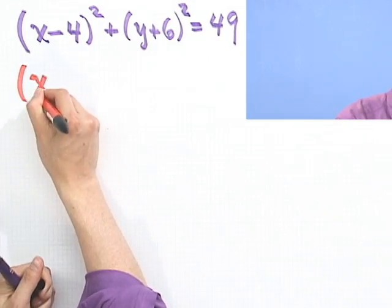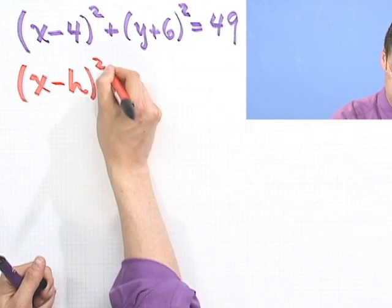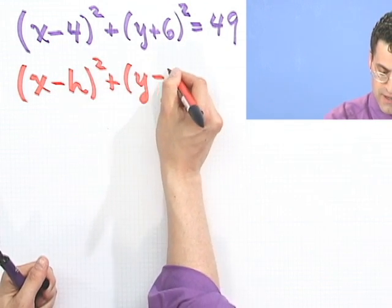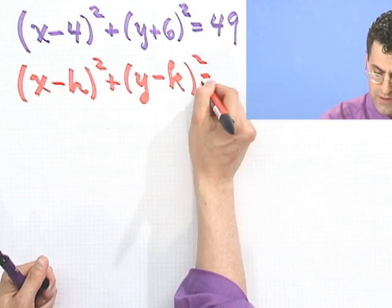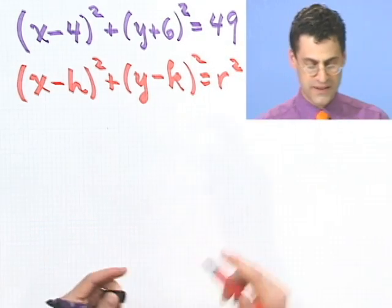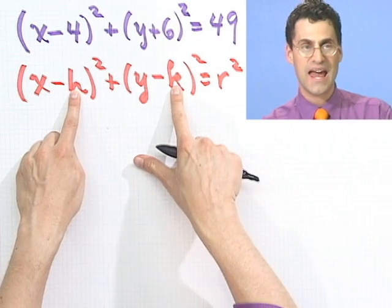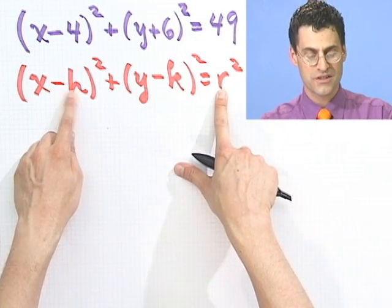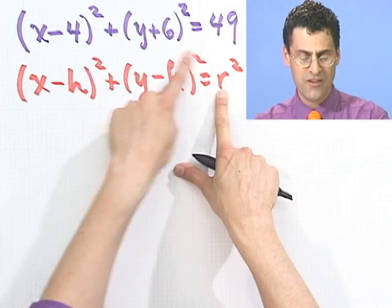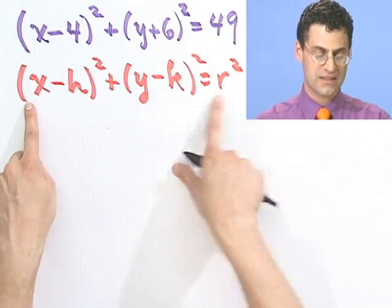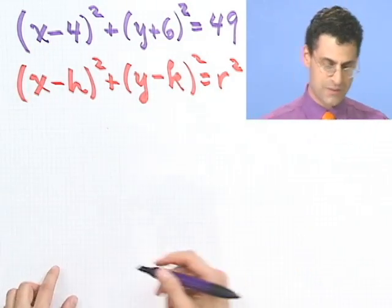That sort of conjures up the thinking of the formula for a circle, which I remind you looks like this: x minus h squared plus y minus k squared equals r squared, where the center of the circle is located at h, k, and the radius is r. So I see that this formula that someone gave me actually looks very much like this general one. So in fact, this must be a circle.